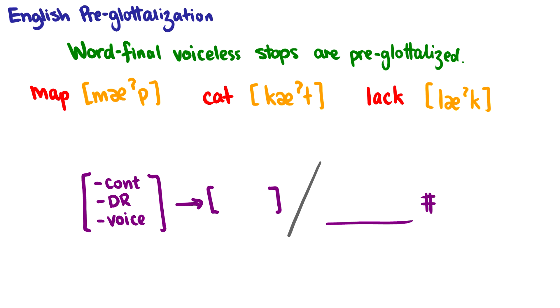Okay, the first one is called English pre-glottalization, and this is a process where word final voiceless stops are pre-glottalized. So for instance we don't say map, we usually say something like map and there is some pre-glottalization at the end like cat, lack. You can hear it's not quite the full sound that we're used to, let's say in the word like mapping, it'd be more like map map map. There is kind of a quick closure at the end there.